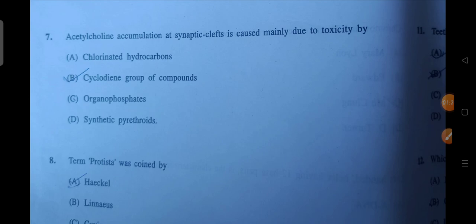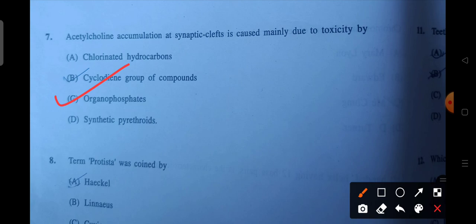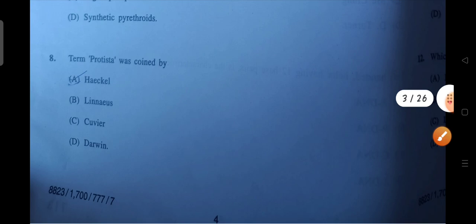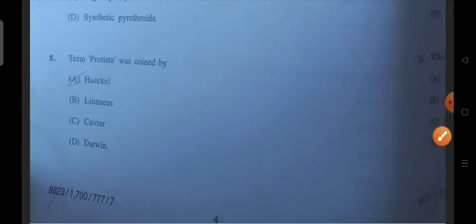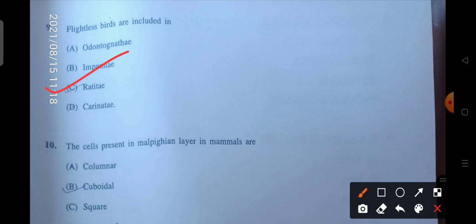Acetylcholine accumulation at nerve tip clefts is mainly due to the toxicity of. So which thing is due to toxicity? So C will be the correct option, organophosphates. Next is the term Protista was coined by. Next question is flightless birds are included in. So C will be the correct answer.